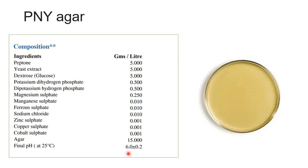In PNY agar, peptone and yeast extract provide amino acids, nitrogenous nutrients, and vitamin B complex. Dextrose is the fermentable carbohydrate. The phosphates form a buffering system, while sodium chloride maintains the osmotic equilibrium. The other salts supply essential nutrients for the growth of Lactobacillus. So PNY agar is mainly used for Lactobacillus.